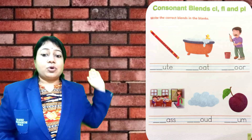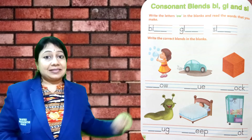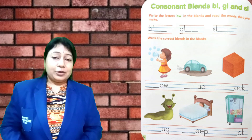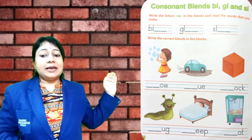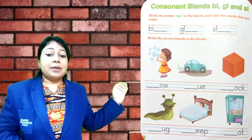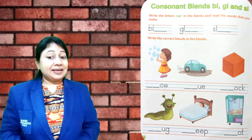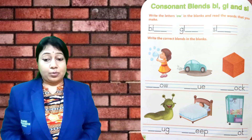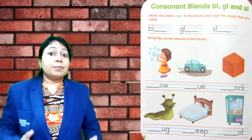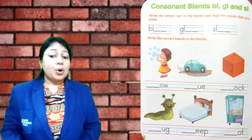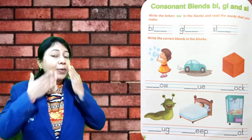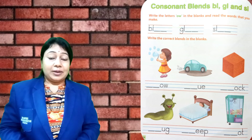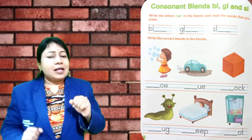What is on our next page? Consonant blends: BL, GL, and SL. Write the letters O and W in the blanks and read the words that you make. B, L, O, W — blow. G, L, O, W — glow. S, L, O, W — slow.